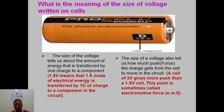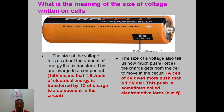It also tells us the amount of push or force the charge gets from the cell to move in the circuit. A 1.5 volt cell doesn't give as much push as a 3 volt cell — a 3 volt cell gives twice the push a 1.5 volt cell can give. This push is sometimes called electromotive force. For now just know that it is the push that the cell gives to a charge to move.